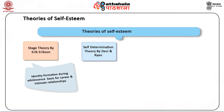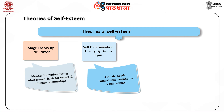According to Deci and Ryan, self-determination theory suggests that humans have three innate psychological needs: competence, autonomy, and relatedness. Competence refers to feeling effective in interacting with one's environment. Autonomy refers to feeling that one's behavior is freely chosen, and relatedness refers to the desire to be connected to others. This theory argues that conditions supportive of these three needs will foster behavior that is self-determined, or motivated by personal choice rather than external control.